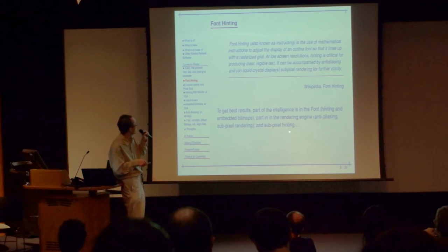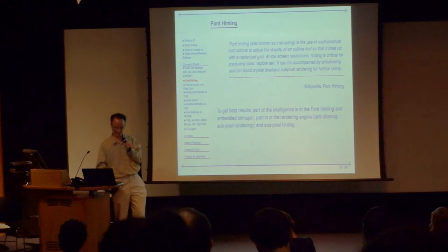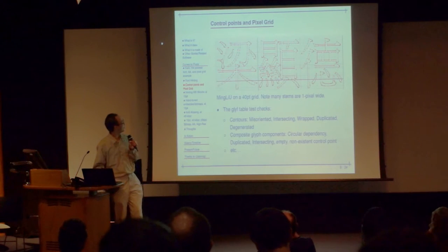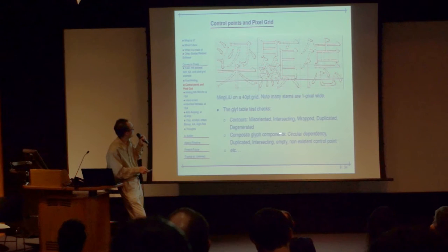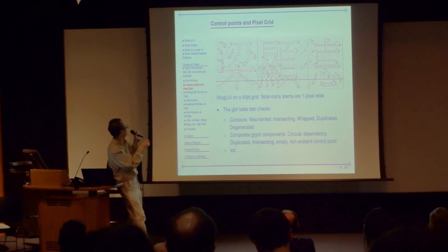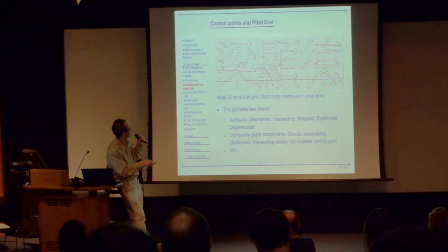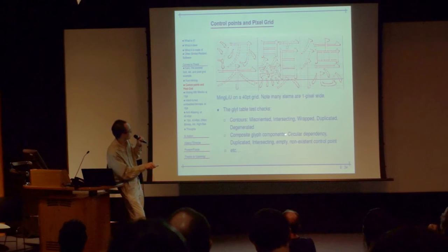To get the best results you use hand hinting and better bitmaps within the font. Some of it succeeds in the rendering engine using anti-aliasing and pixel rendering. The glyph test checks contours: whether they are disoriented — contours should go around in clockwise direction — whether they are intersecting, whether a contour wraps around itself, whether there are duplicated or degenerate elements, and whether control points overlap each other. Composite glyph components are also tested for duplications of all these elements.